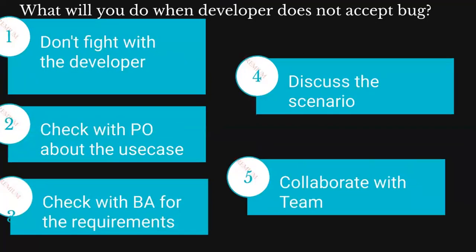Now, what will you do when a developer does not accept a defect? This is a straightforward question, but generally people answer in interviews that they will fight with the developer, go and complain to the manager about the developer's behavior, or try to create a scene in the organization. This is not acceptable professional behavior. Don't fight with the developer, don't argue with them. Instead, get into the proper process.